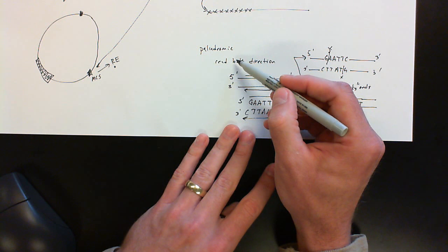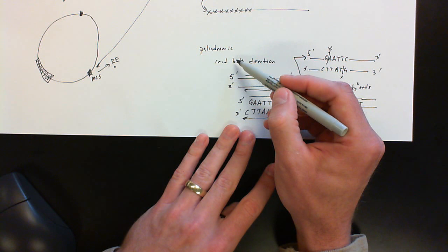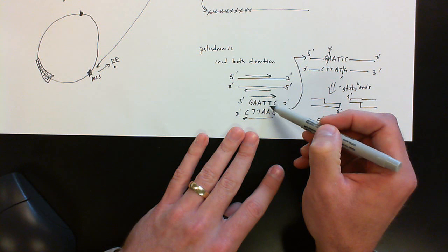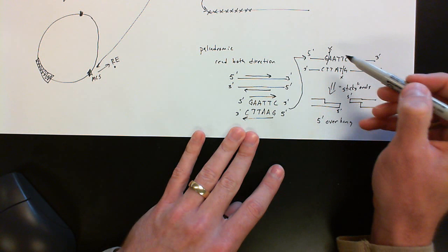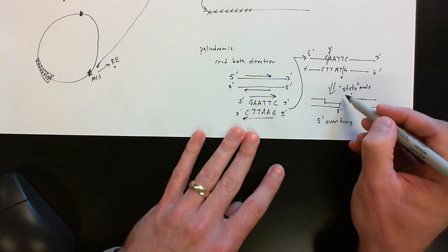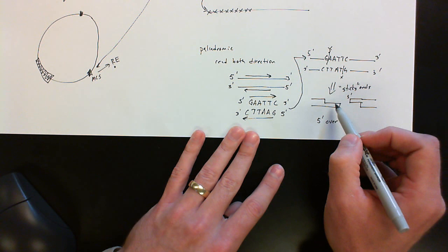Alright, so once again, the endonuclease can cut within a strand. It cuts at what we call palindromic sequences, so they can be read in both directions, and that's referring to the two strands. Typically when they cut, they create what we call sticky ends because they have a 5' overhang. In a subsequent video now, I'm going to show you how we can use these then to glue pieces of DNA back together. So the restriction endonucleases allow us to do our cutting. Now what we have to also be able to do is paste them together so we can put them into our plasmid.